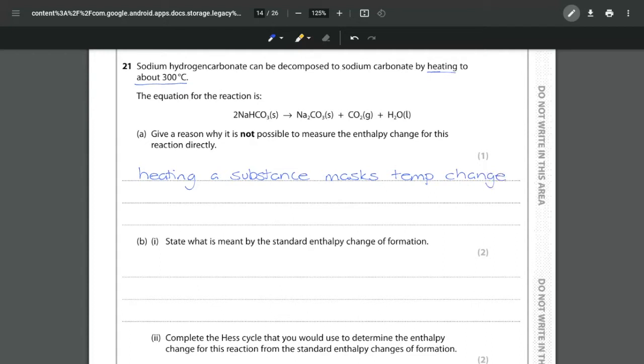It is going to mask any change in temperature because you don't know: are you measuring the change in temperature of the actual decomposition, or are you simply measuring the temperature of the heat from the Bunsen burner or your heat source?